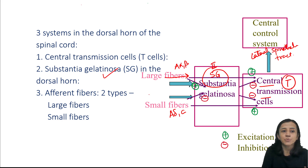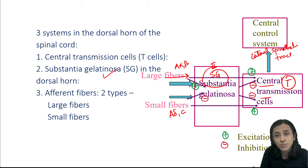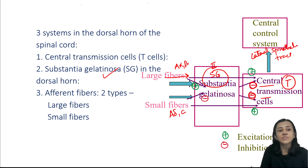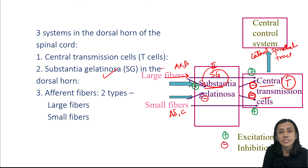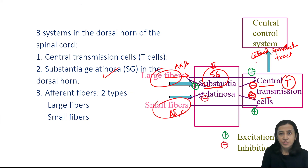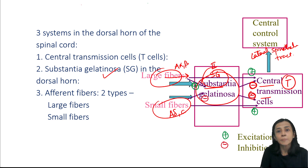Second is substantia gelatinosa, present in the dorsal horn. Substantia gelatinosa inhibits or regulates the activity of central transmission cells. Another important thing: the activity of substantia gelatinosa is regulated by large and small fibers. Central transmission cell activity is regulated by substantia gelatinosa, and substantia gelatinosa activity is regulated by large fibers and small fibers.